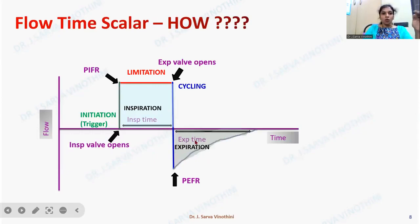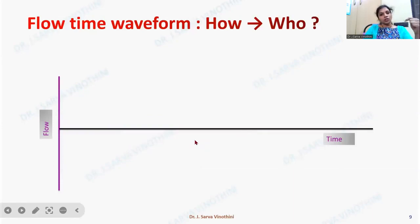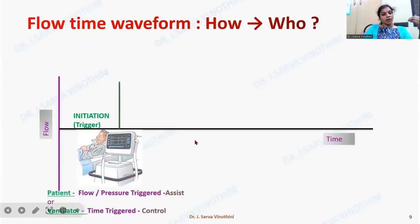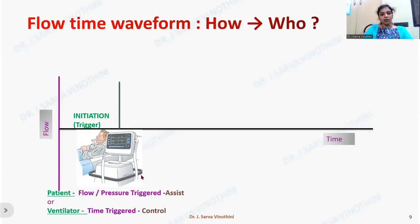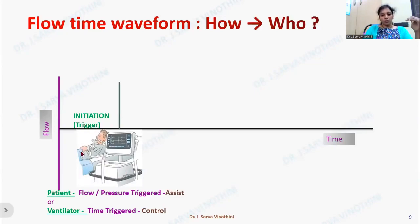Now that we know how the flow-time scalar is plotted, let us see who does all these things — who triggers the breath. The trigger could either be by the patient or by the ventilator. If triggered by the patient, we call it an assisted breath; if by the ventilator, a controlled breath. In a controlled breath, the trigger is always time — for example, 10 breaths per minute means the ventilator gives a breath every six seconds. If the trigger is flow or pressure, it is an assisted breath where the patient initiates flow or negative pressure, after which the ventilator initiates the flow.